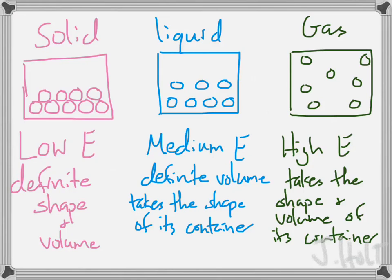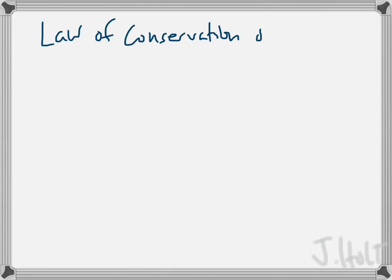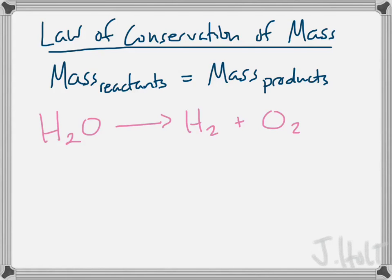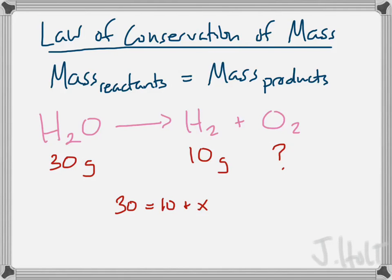It takes the shape and the volume of its container. The law of conservation of mass says that the mass of the reactants has to be equal to the mass of the products — in other words, what's on each side of the equation all has to add up to the same mass. For example, if you take H₂O and split it into hydrogen gas and oxygen gas, you have to have the same amount on the left side as on the right side. So if you start with 30 grams of H₂O and make 10 grams of hydrogen, you make 20 grams of oxygen.